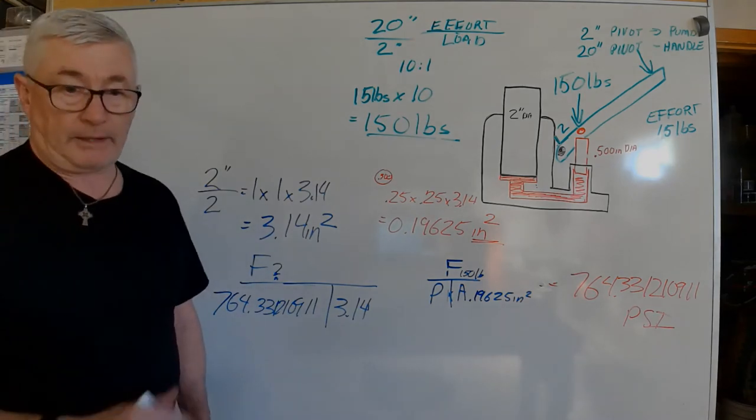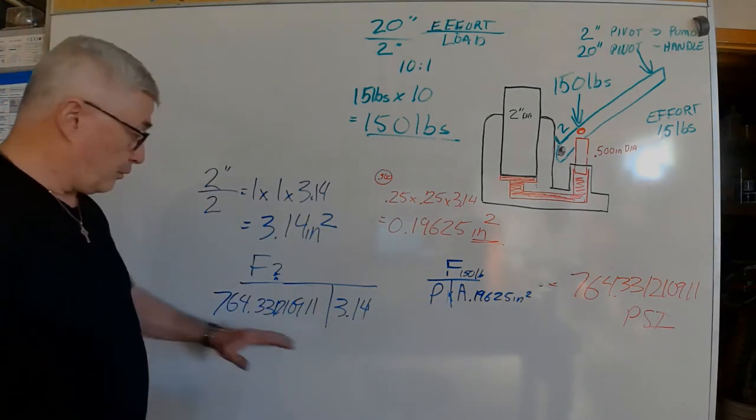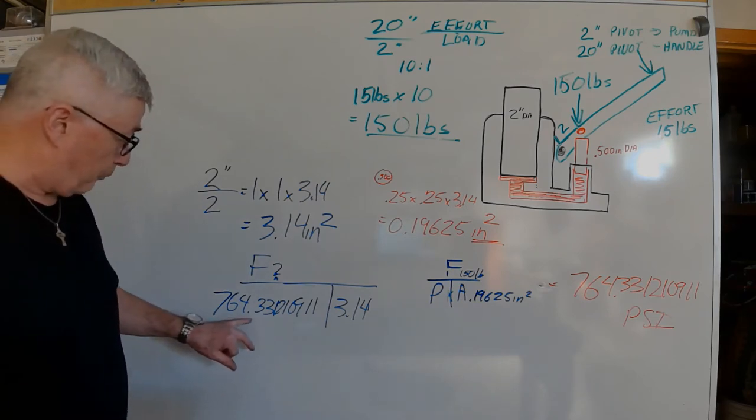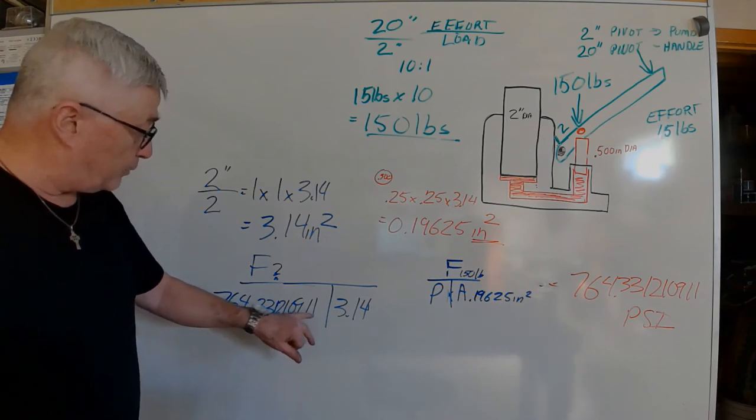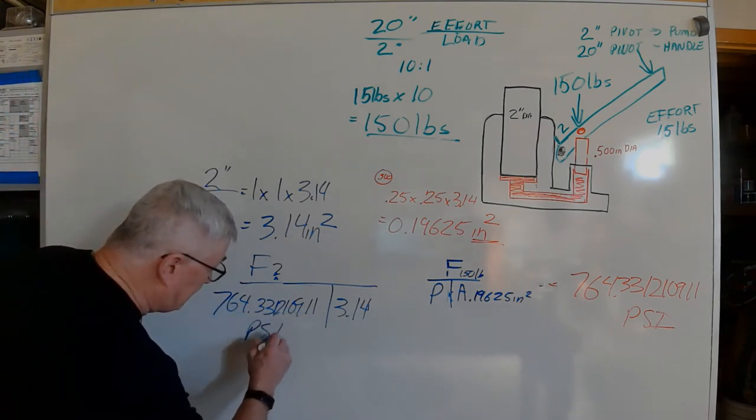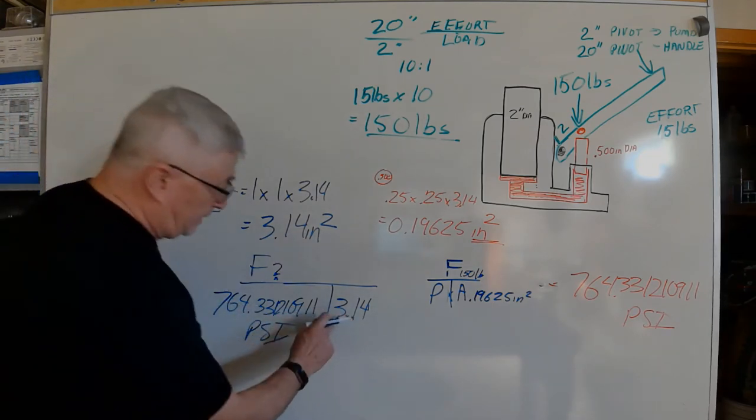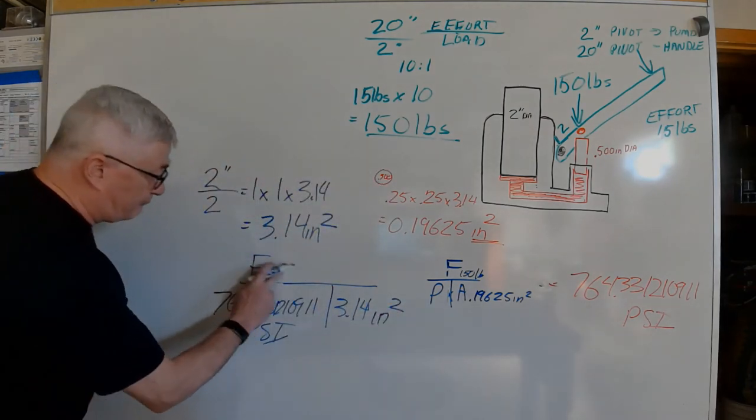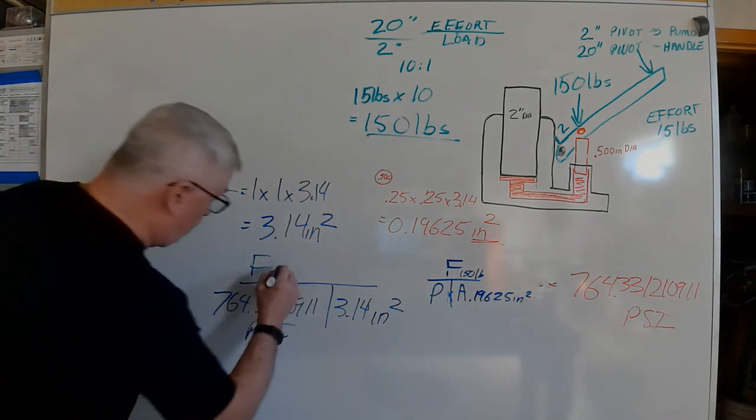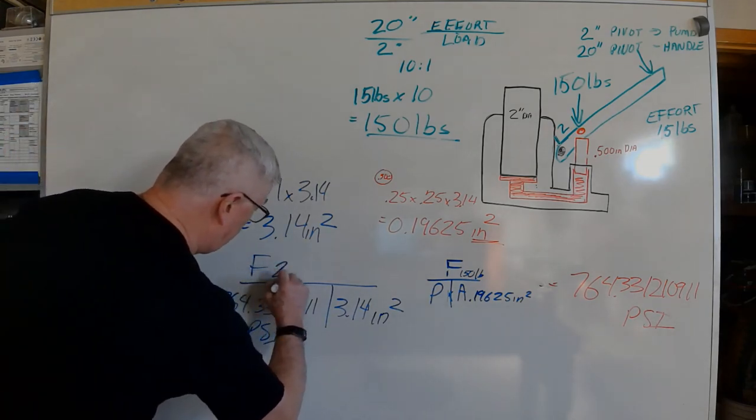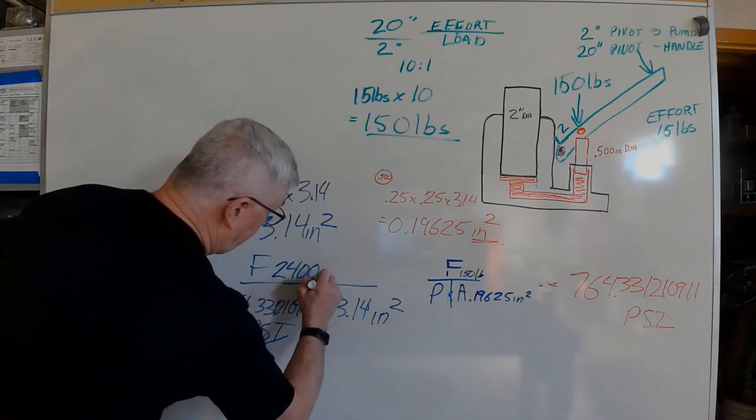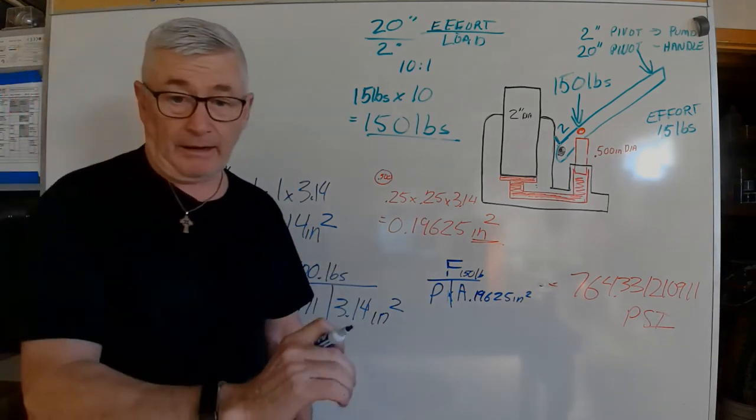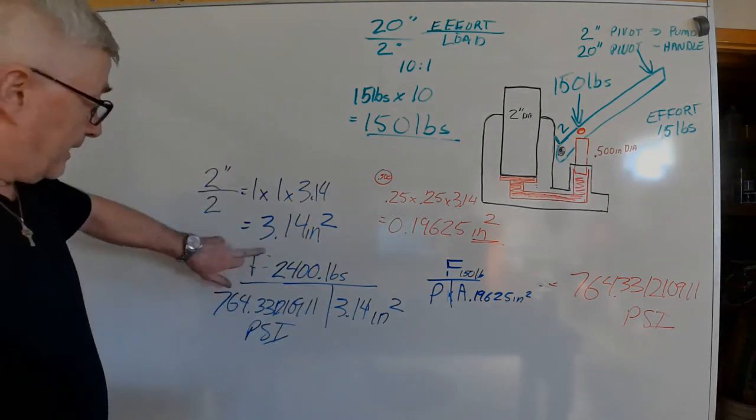This time we don't know what the force is. We do know that the pressure is 764.331210911. When we take 764.331210911 psi and multiply it by 3.14 inches squared, we come up with a force of 2400 pounds exactly.